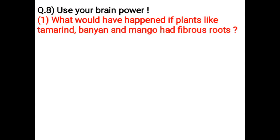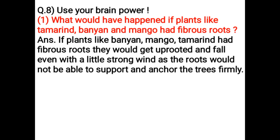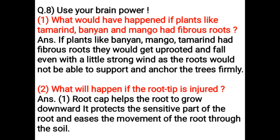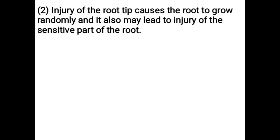Use your brain power. What would have happened if plants like tamarind, banyan, and mango had fibrous roots? If plants like banyan, mango, and tamarind had fibrous roots, they would get uprooted and fall even with a little strong wind, as the roots would not be able to support and anchor the trees firmly. What will happen if the root tip is injured? Root cap helps the root to grow downward — it protects the sensitive part of the root and eases the movement of the root through the soil. Injury of the root tip causes the root to grow randomly and may also lead to injury of the sensitive part of the root.